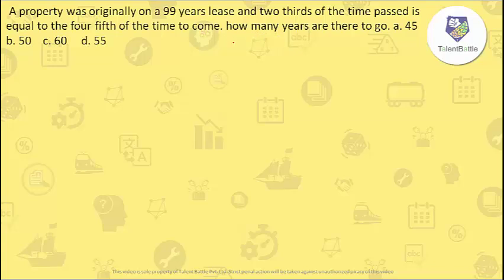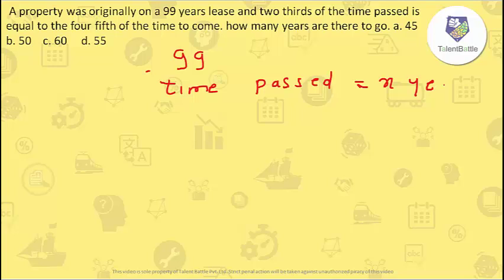The question can become easy if you just write down the proper equation. The property was originally on a 99-year lease, so the total time period is 99 years. Two-thirds of the time past — I will consider the time past as X years. So time past is X years, and time to come will then become 99 minus X. So still 99 minus X years are to come.